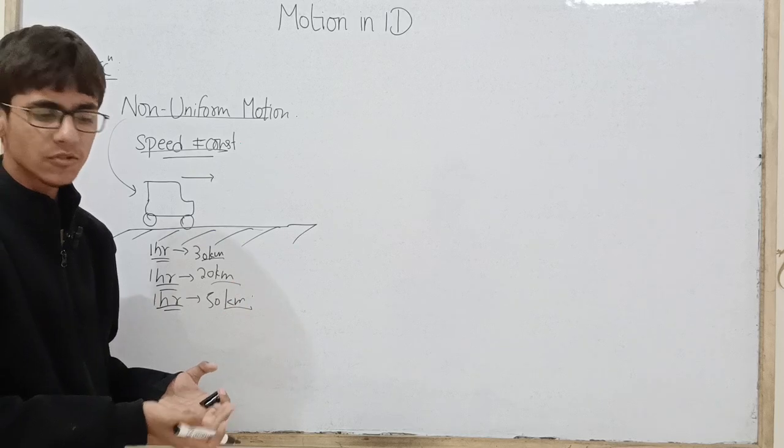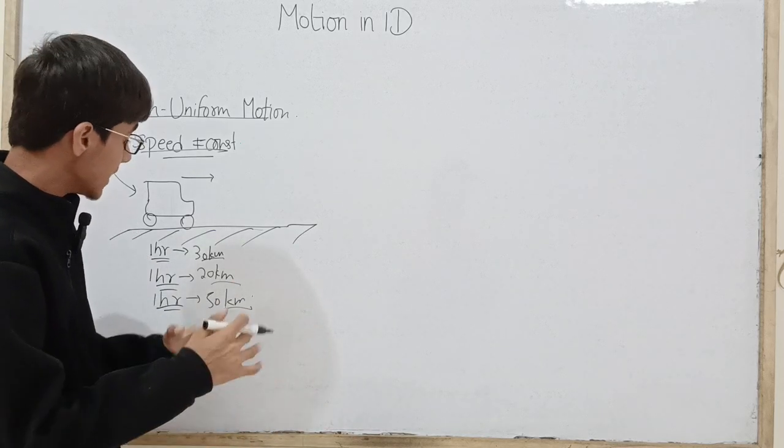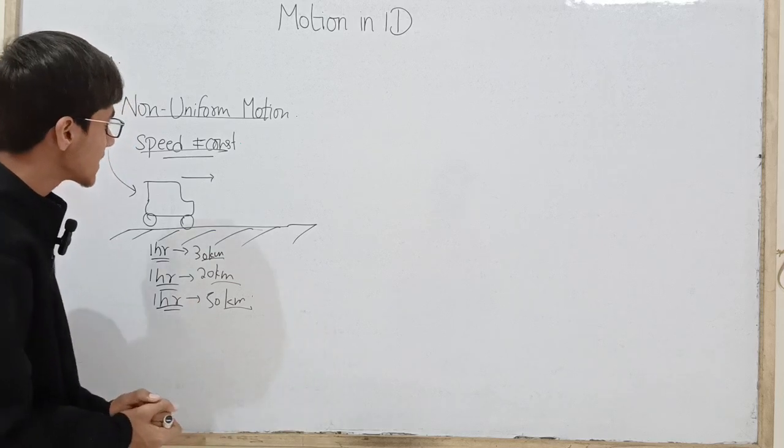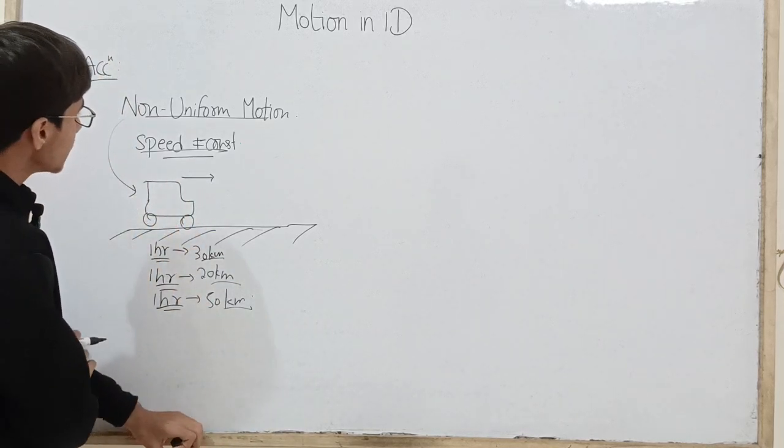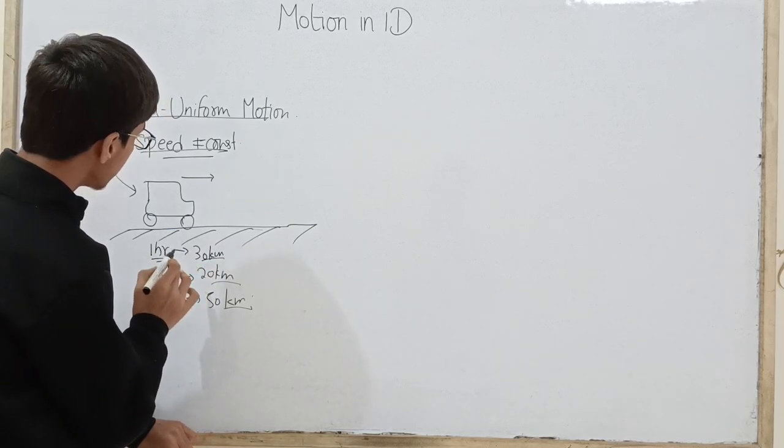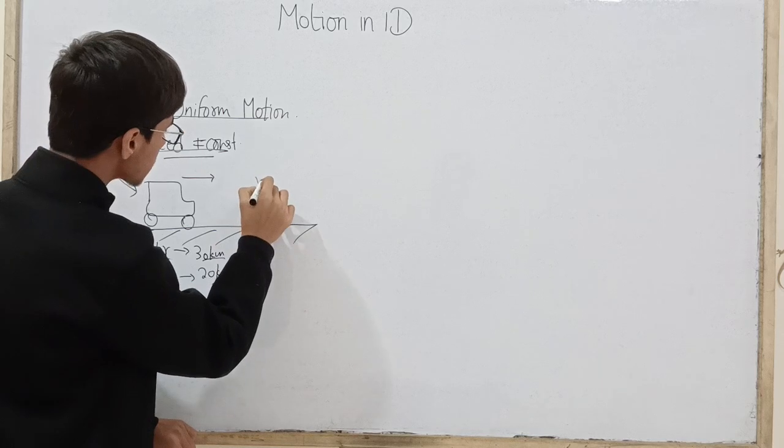Ye unequal distances kya travel karta hai kyunki speed non-constant hoti hai. Speed vary kar raha hai ki pehle ghante mein kisi aur speed se move kar raha hai, dusre ghante mein kisi aur speed se move kar raha hai, tisre ghante mein kisi aur speed se move kar raha hai. That is the reason ki yahan pe motion non-uniform hai.